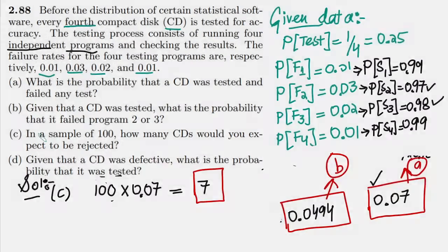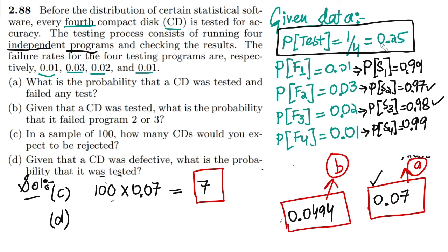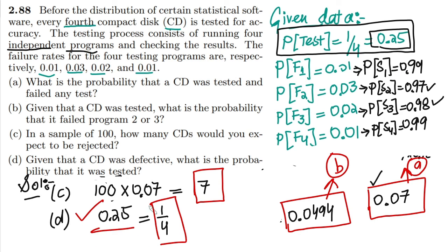For part D: given that a CD was defective, what is the probability that it was tested? Since every fourth CD is tested, the probability of being tested is 1 out of 4, which is 0.25. So if a CD is defective, the probability that it was tested is 0.25. This is the solution of part D and completes question 2.88.